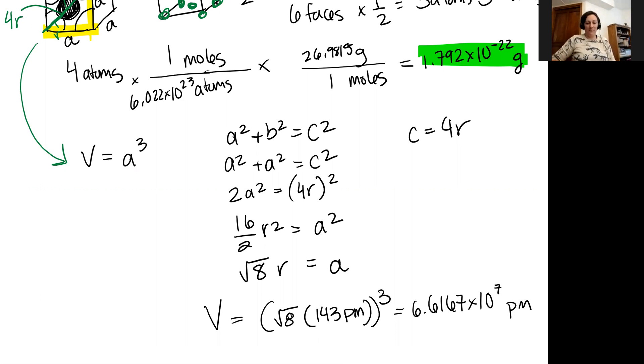All right. I have yet to see density reported in units of grams per picometer cubed. Usually it's grams per milliliter. All right. If you remember, one centimeter cubed equals one milliliter. So I'm going to try to convert this volume into centimeters cubed.